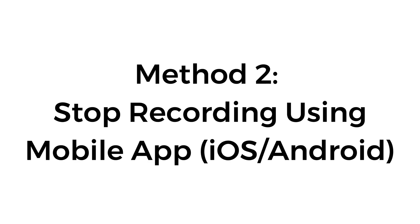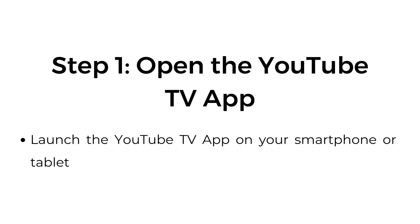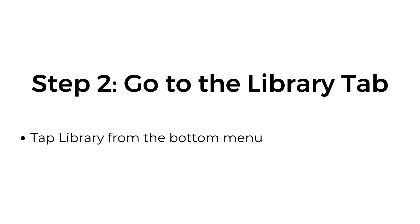Method number two: stop recording using the mobile app. Step one, open the YouTube TV app — launch the YouTube TV app on your smartphone or tablet. Step two, go to the library tab — tap library from the bottom menu.